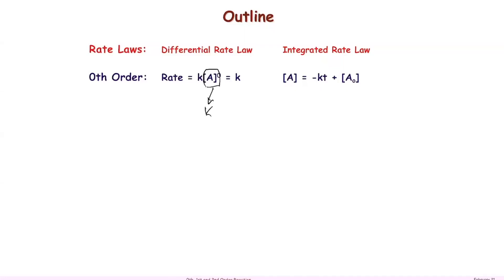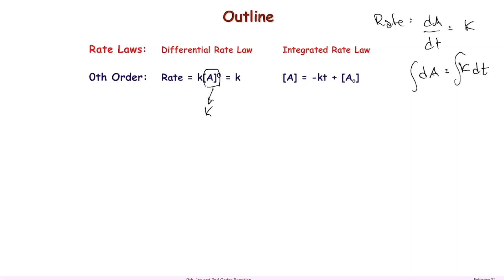The integrated rate law comes from the fact that the rate equals dA/dt in calculus, and that's just equal to k. What you do to solve that is separate the variables and then integrate. If you do this math, that's the solution you get.